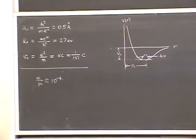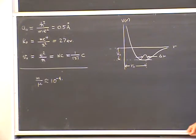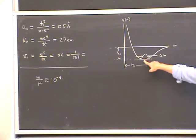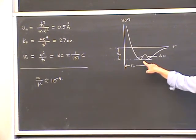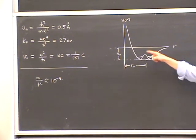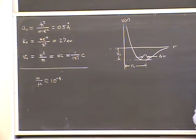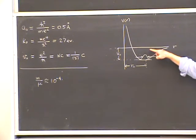Let me just remind you that last time we were talking about the dynamics of molecules. At the end of the hour we came to the conclusion that if the molecular vibrational state is in its ground state, it's roughly a harmonic oscillator down to the bottom of the well, to the extent that the bottom of the well can be approximated by a parabola. This approximation is only valid when the quantum numbers are small, when you're near the bottom of the well.